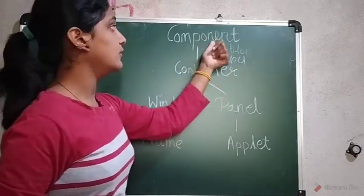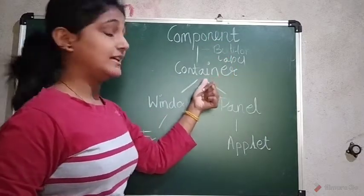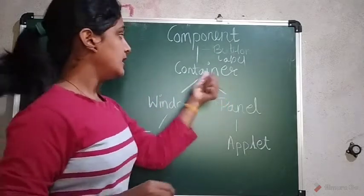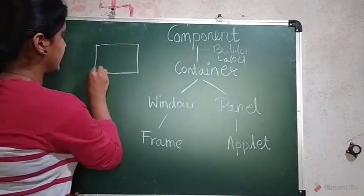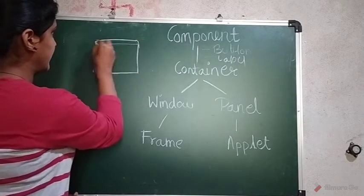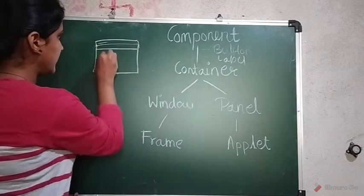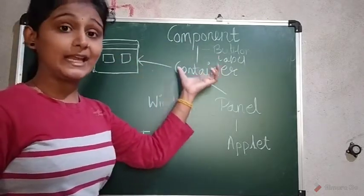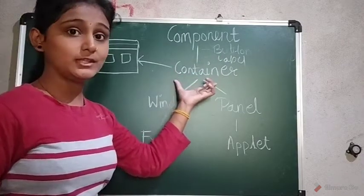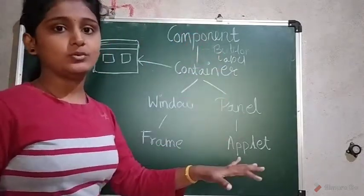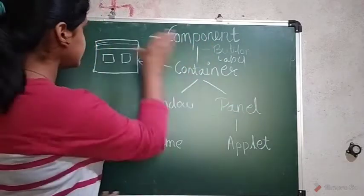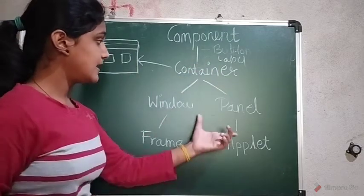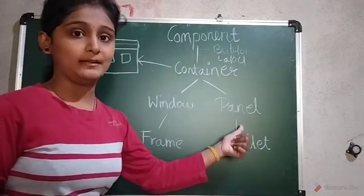Moving towards the next: the Container. Its superclass is the Component class, meaning Container is a subclass of Component. As the name tells you, it contains another component. For example, a frame has a title bar and menu bar, and it contains buttons and text fields — so it is a container. It is responsible for holding other components or controls.